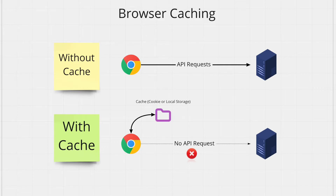Now let's say you decide to use browser caching. The first time the user visits your website you'll make an API call, retrieve the data, and then stick that data into the user's browser storage. Now if the same user visits your website 20 times that hour, instead of making 20 API calls you retrieve the data from the cache super quickly. This means your user's subsequent visits are going to be much faster and less expensive.